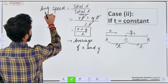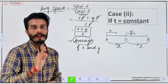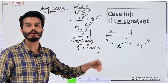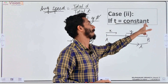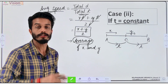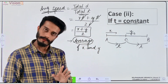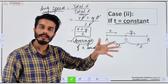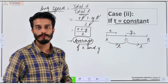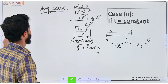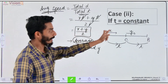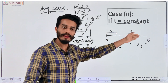Under what condition is average speed equal to the average of the two speeds? When time is constant, average speed equals (X + Y) / 2. So: if distance is constant, the formula is 2XY / (X + Y). If time is constant, the formula is (X + Y) / 2.